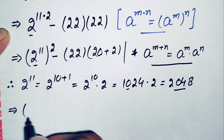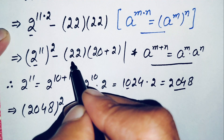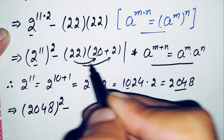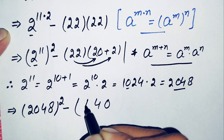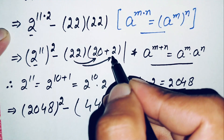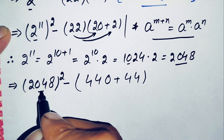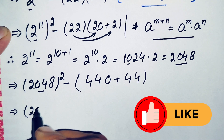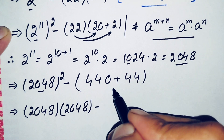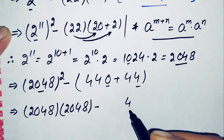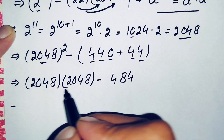Substituting back, the equation becomes 2048 whole squared minus 22 times 22. We multiply 22 first with 20 and then with 2: 22 times 20 is 440, and 22 times 2 is 44, giving 440 plus 44 equals 484. So we have 2048 squared minus 484.